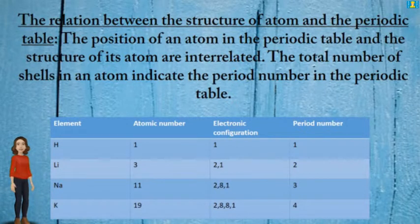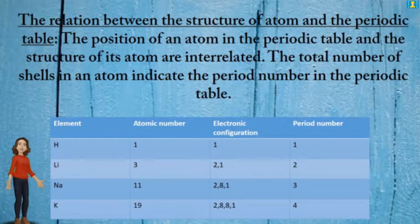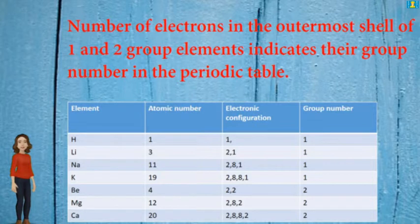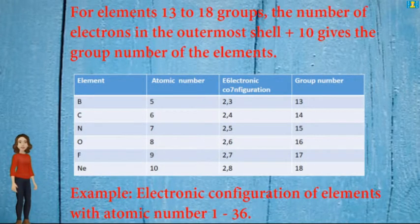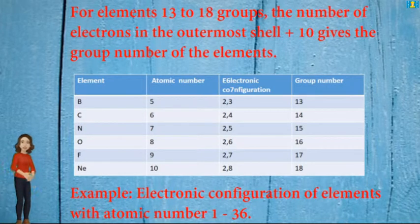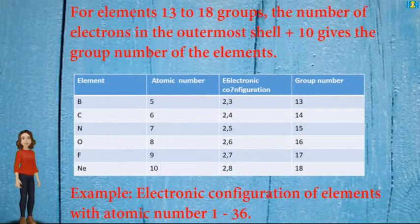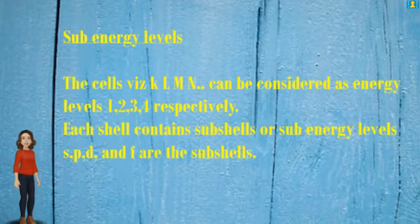The relation between the structure of atom and the periodic table: the position of an atom in the periodic table and the structure of its atom are interrelated. The total number of shells in an atom indicates the period number. For group 1 and 2 elements, the number of electrons in the outermost shell indicates their group number. For groups 13 to 18, the number of electrons in the outermost shell plus 10 gives the group number.